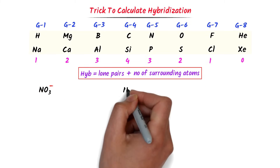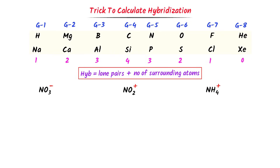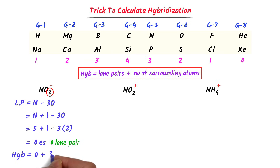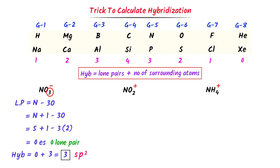Finally, let me teach you one exam question. Calculate the hybridization of nitrogen in NO₃⁻. I write nitrogen minus 3 oxygen. The negative 1 charge means the ion has gained 1 electron, so I add 1 to the central atom: (5+1) − (3×2) = 0 electrons — no lone pair. Hybridization = 0 + 3 = 3 hybrid orbitals, meaning sp² (1s and 2p). The hybridization of nitrogen is sp², and this 3 stands for trigonal, so the geometry is trigonal.